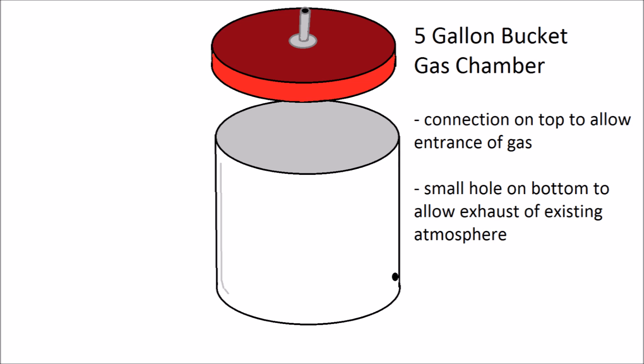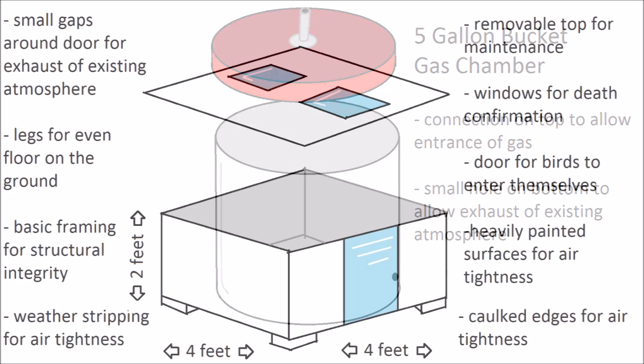For killing a single bird, using a 5-gallon bucket is not a bad idea. You would simply need some kind of connection at the top to allow entrance of gas, and a small hole on the bottom to allow exhaust of the existing atmosphere, in order to bring the oxygen level down below 2%.